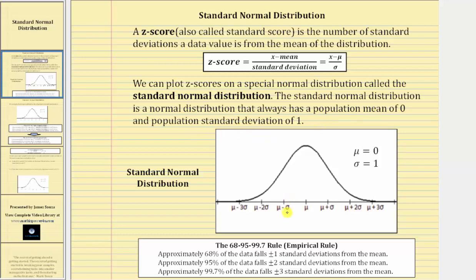So if we label the normal distribution with a mean of zero and a standard deviation of one, we have what's called the standard normal distribution. So the mean is zero, and because the standard deviation is one, to the right of zero, we have one, two, three standard deviations, which are also z-scores.